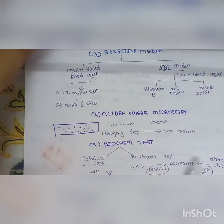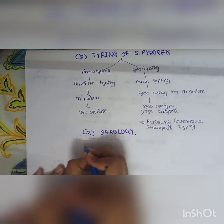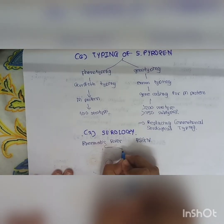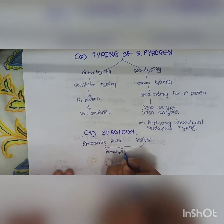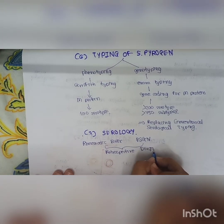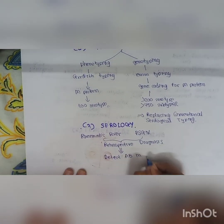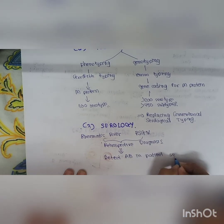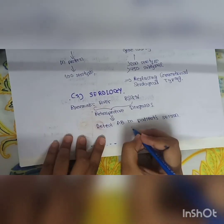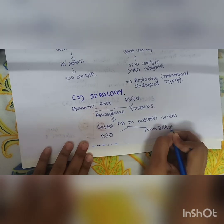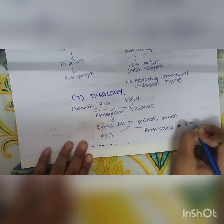The seventh method is serology. Since GAS causes rheumatic fever and post-streptococcal glomerulonephritis (PSGN), we perform retrospective diagnosis to detect antibodies in patient serum. We detect two antibodies: ASO (anti-streptolysin O) antibody and anti-DNase B antibody.